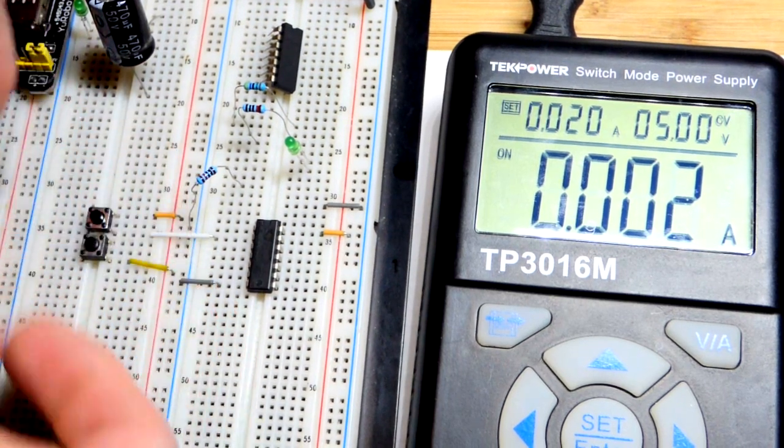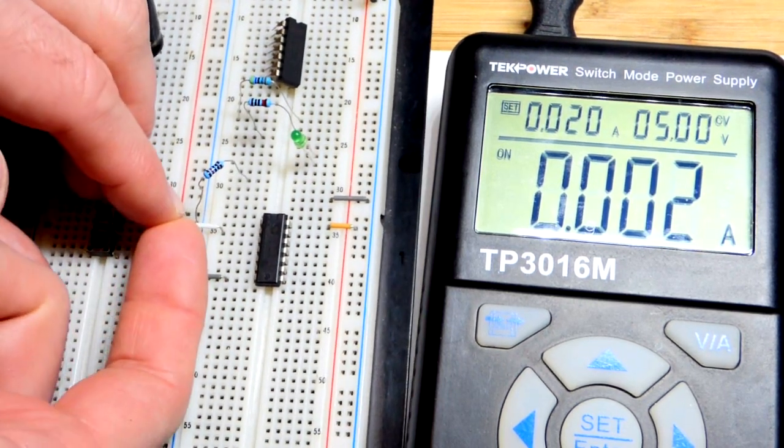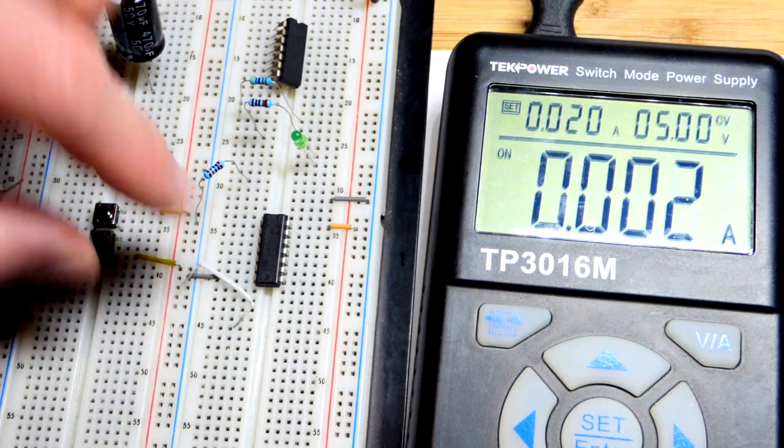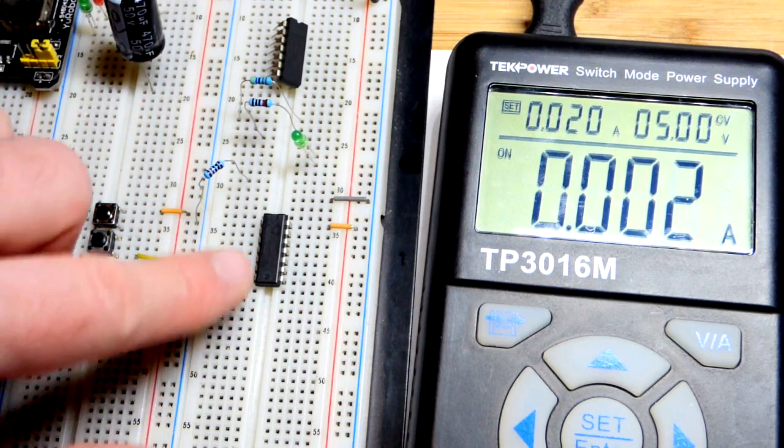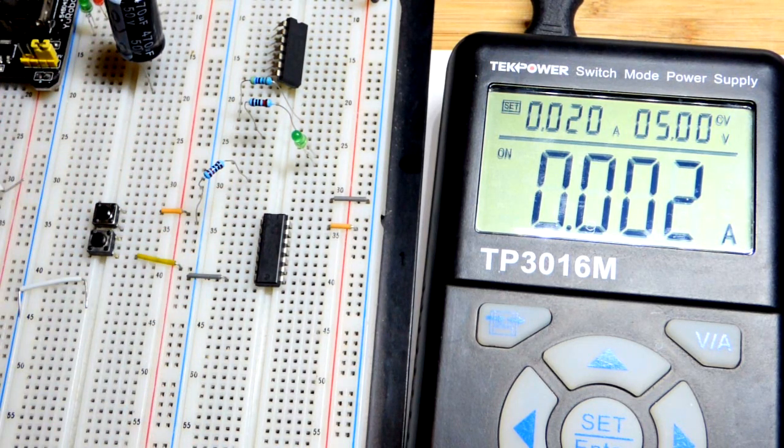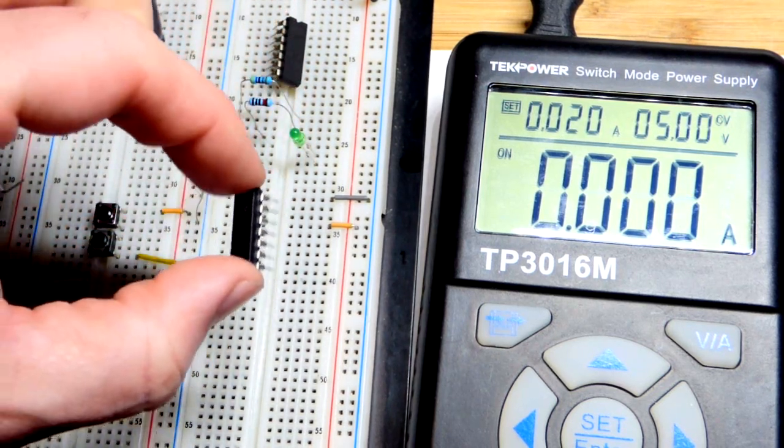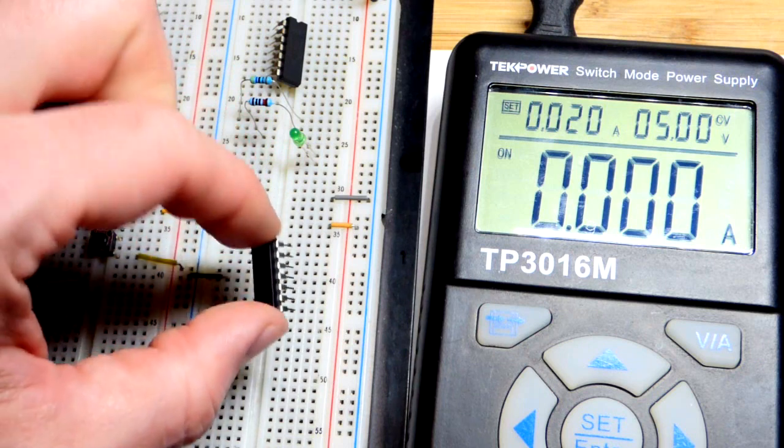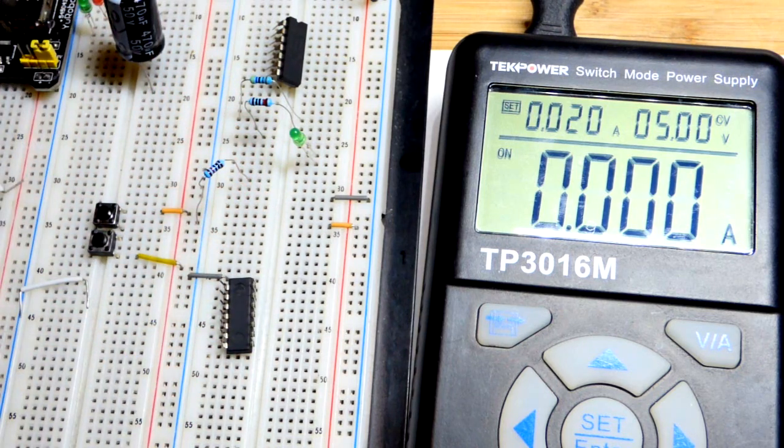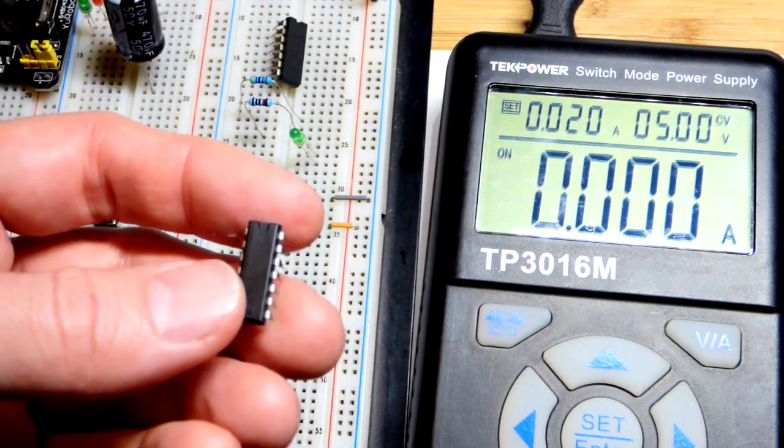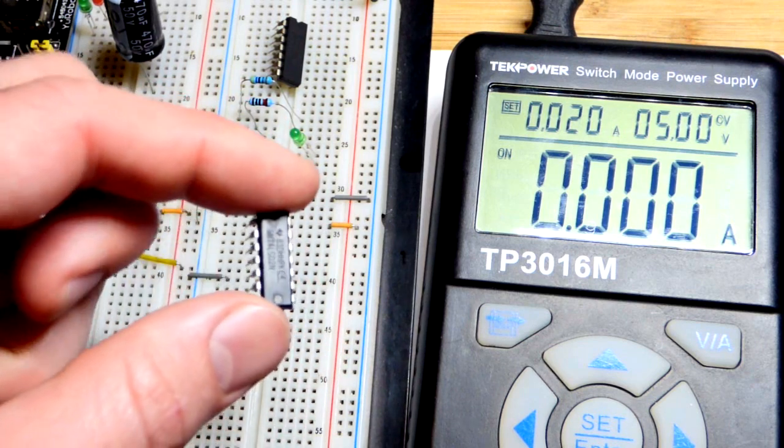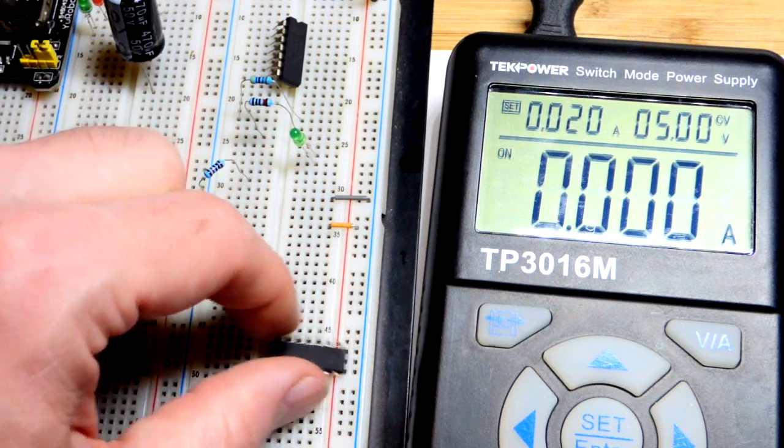That's the integrated circuit by itself, about two milliamps of current just to power its internals. You can see we unplug it, we get to no current. So we saw if you need to save on current, this is definitely the better option.